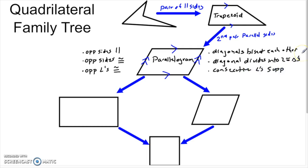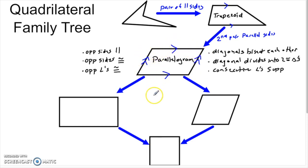Let's pause on consecutive angles. Consecutive means one after another — if I walk around this shape starting at one angle, the next angle I come to is a consecutive angle, and those are supplementary. This is easy to see because a parallelogram has parallel lines. If you think of one side as a transversal to the two parallel sides, those angles are same side interior angles. We already know that same side interior angles are supplementary, so those two angles have to be supplementary.